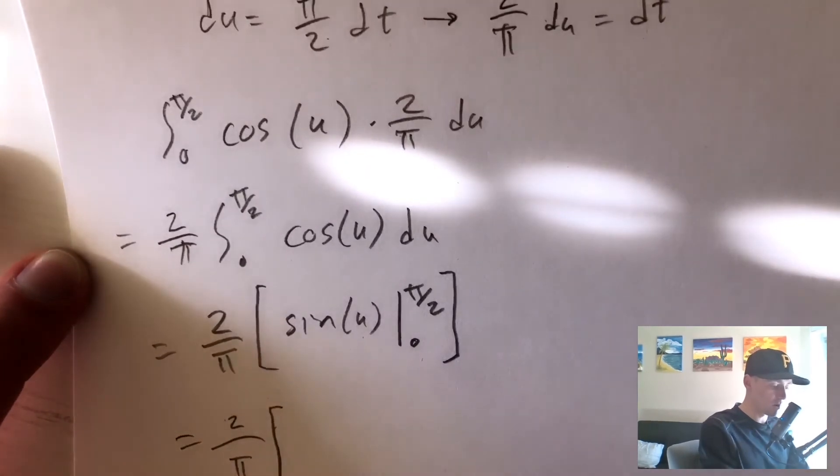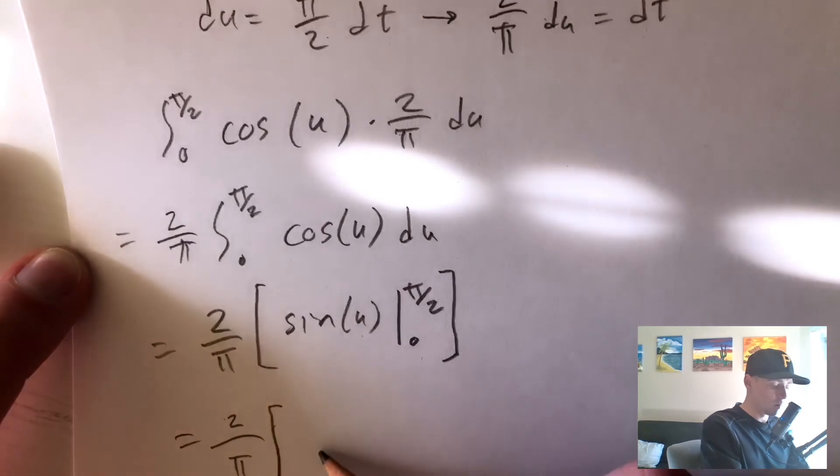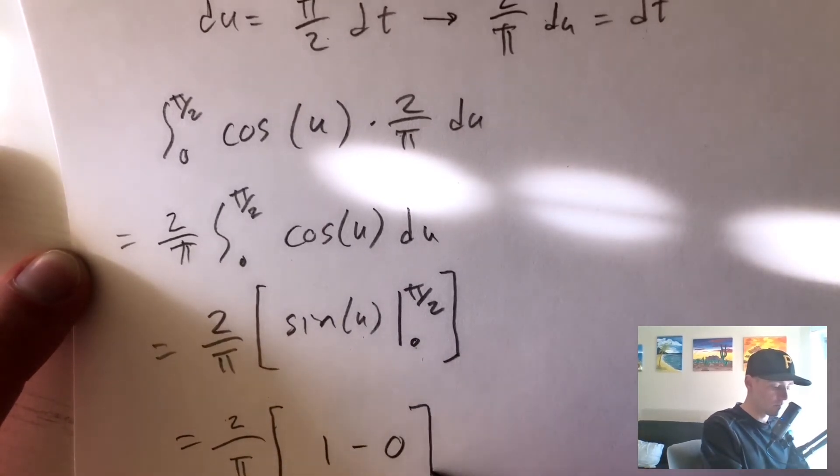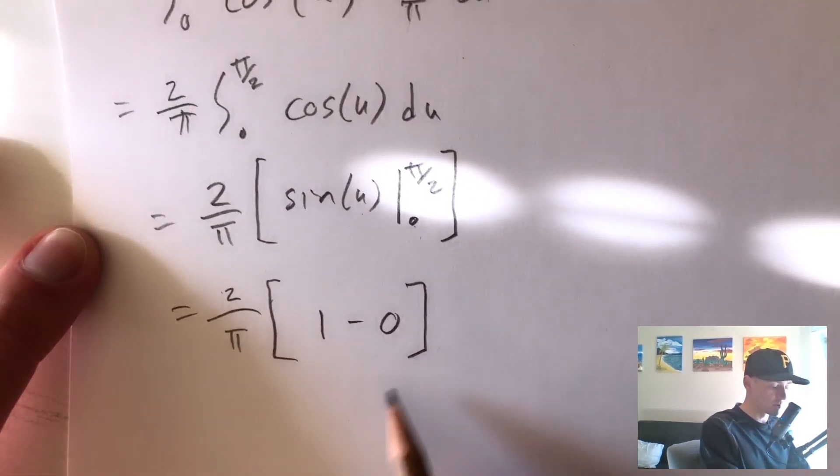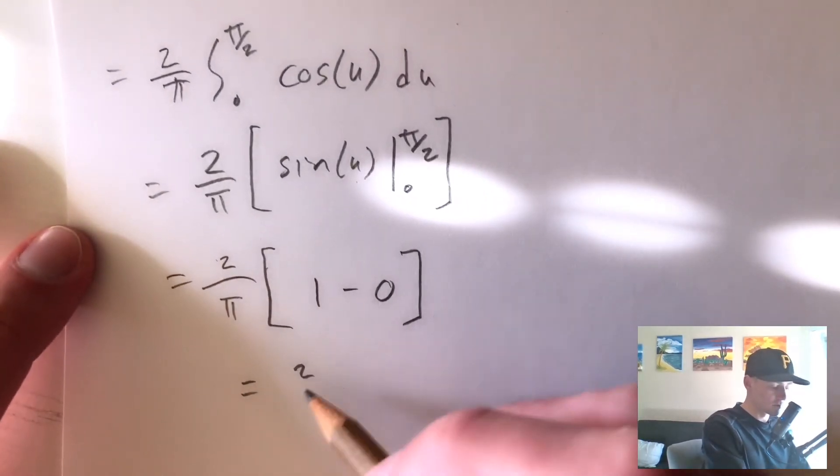So this is going to equal 2 over pi out front. Sine of pi over 2 is going to give us 1, and then sine of 0 is going to give us 0. So this just gives us 2 over pi times 1 minus 0, which is just 1. 1 times 2 over pi is just 2 over pi.